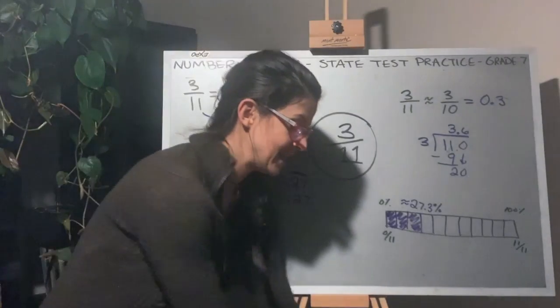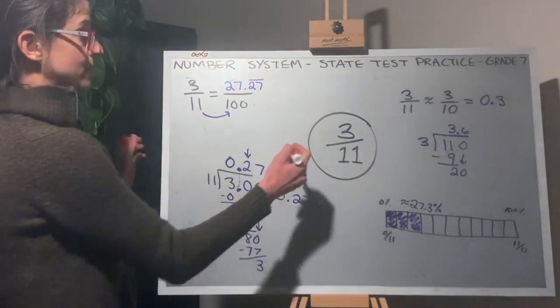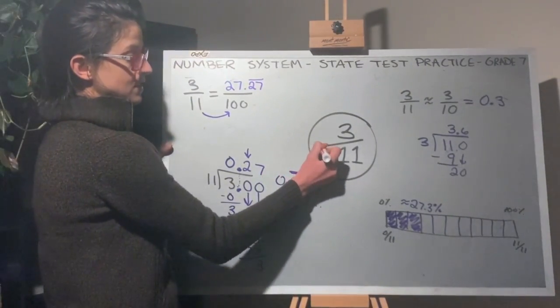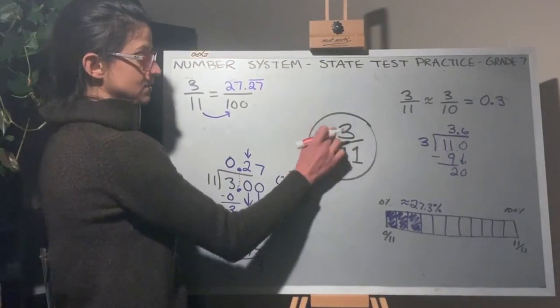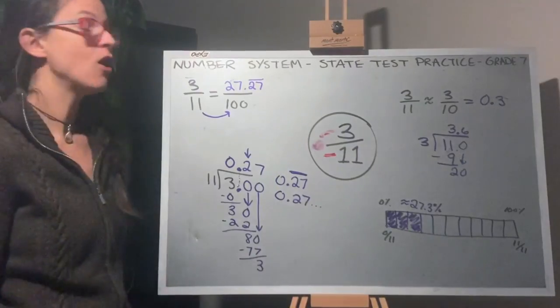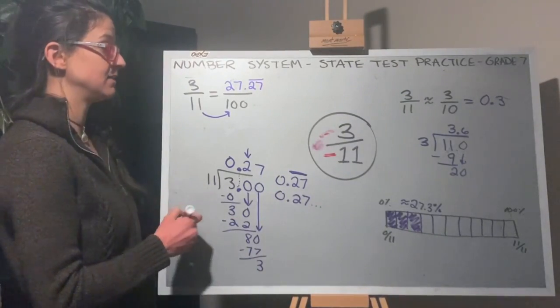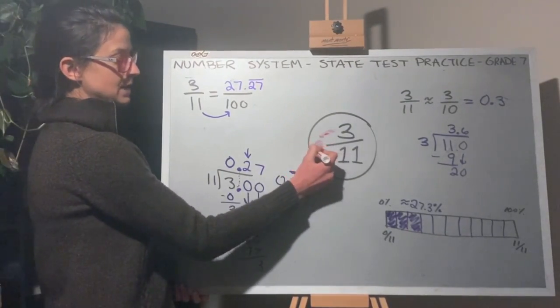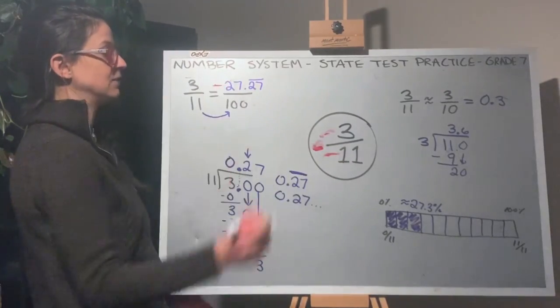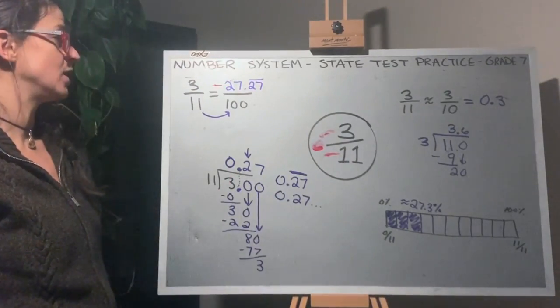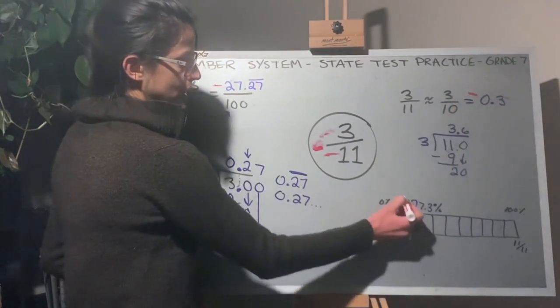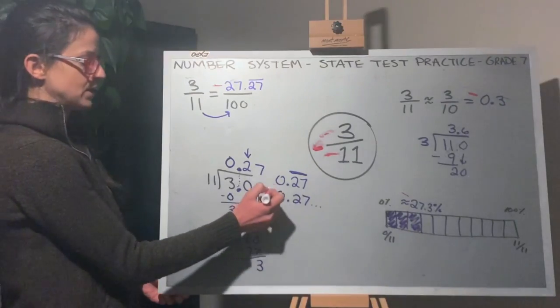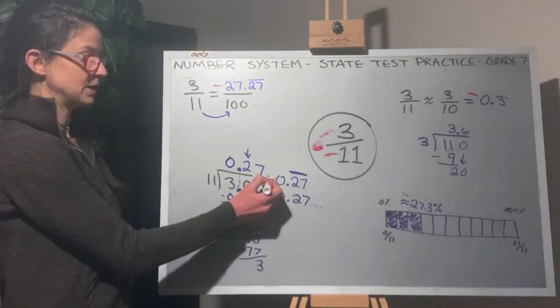Now, if we had a negative sign in front of the entire fraction, just the 3, or just the 11, all of these would turn to negative. So negative 3 elevenths is negative 27.27 out of 100, or negative 3 tenths, or negative 27.3%, or negative 0.27 repeated.